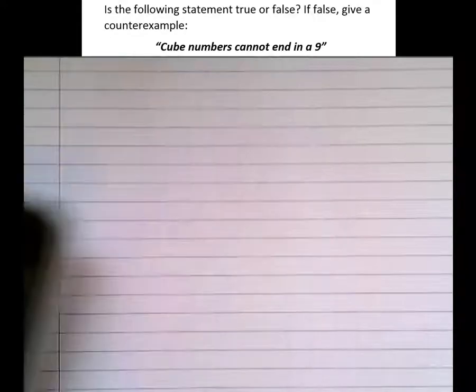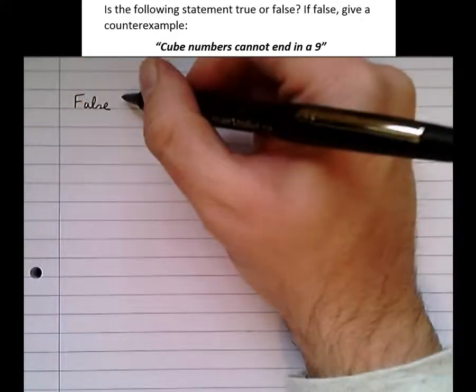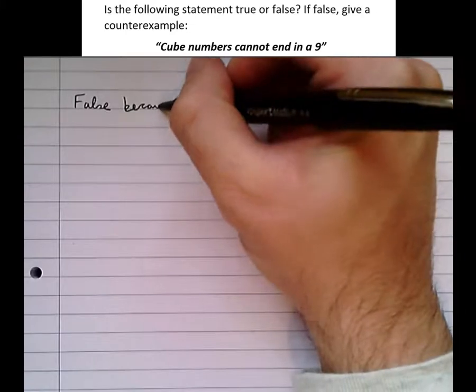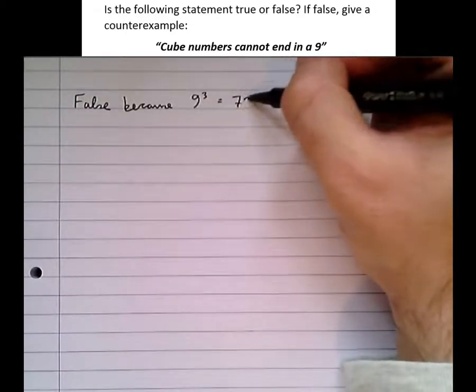So our answer would be false, because 9 cubed equals 729.